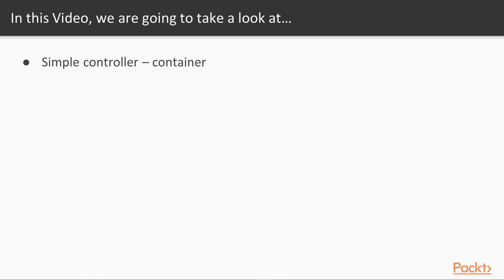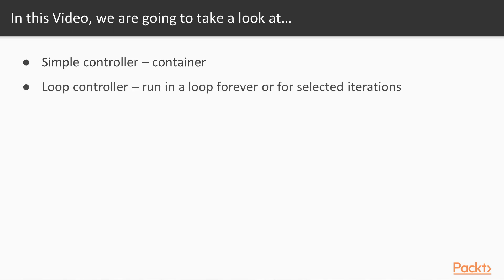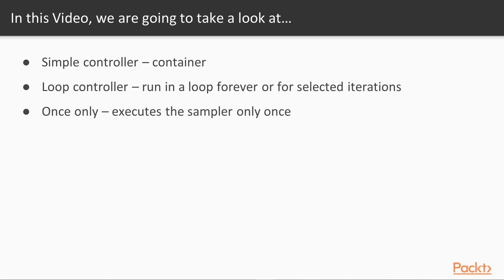We also have a loop controller where we can decide how many times we want to execute a particular sampler. We can also run this request forever and we'll see how we can do that. Then we'll take a look at once only controller, where as the name suggests, we'll execute a sampler request only once. So let's see how we can control the iteration of every sampler using once only, loop controller, or simple controller.